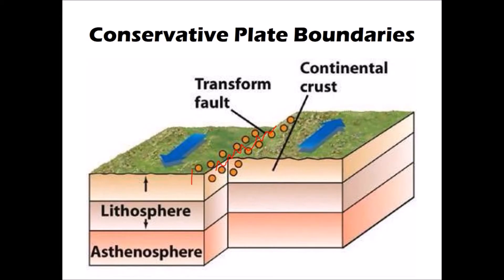As you can see from this diagram, we don't get any volcanic activity at a conservative plate margin. That is because there is no subduction going on, and the lithosphere isn't being stretched and thinned to allow magma to reach the surface. So we don't associate these boundaries with volcanic activity, but we do associate them with seismic activity — with earthquakes.